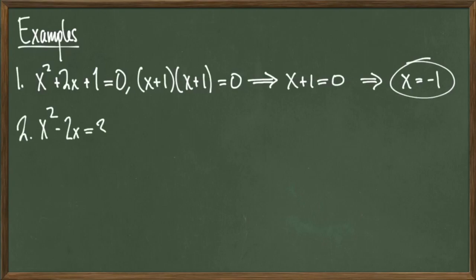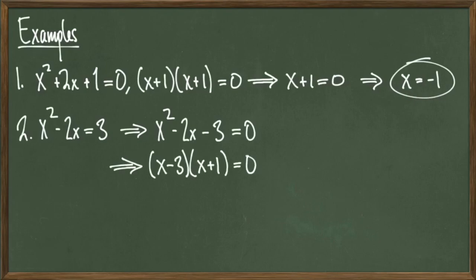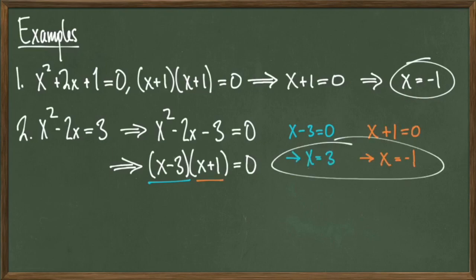In this next example, consider x squared minus 2x equals 3 as our quadratic equation. This isn't quite in the form that we want it to be in, but we can fix that by subtracting 3 from both sides to get x squared minus 2x minus 3 equals 0. This polynomial factors into x minus 3 times x plus 1, so set that equal to 0. Here our linear factors are both different, so we'll have two linear equations to solve. The first is x minus 3 equals 0, which gives us x equals 3 as our first root, and the second is x plus 1 equals 0, which gives us x equals negative 1 as our second root. And we're done.